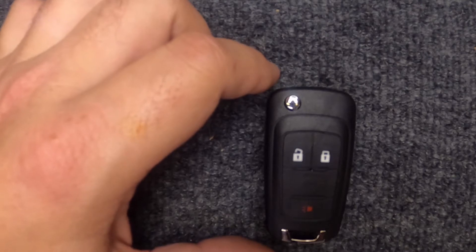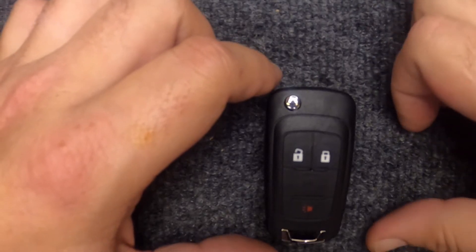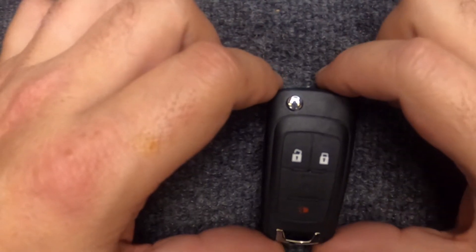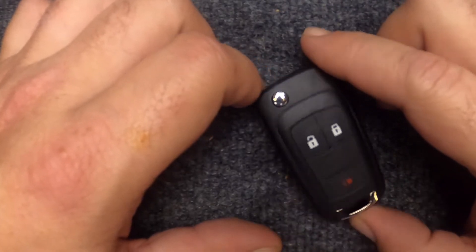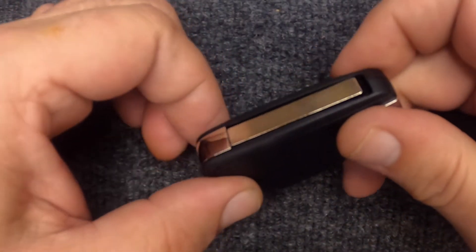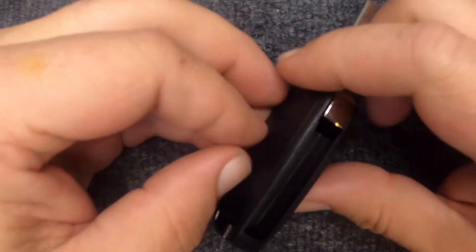Hey, it's Iron Locksmith here. We're going to do a battery change on your remote. This is for your three-button flip key remote. Let's go ahead and hit your release button.